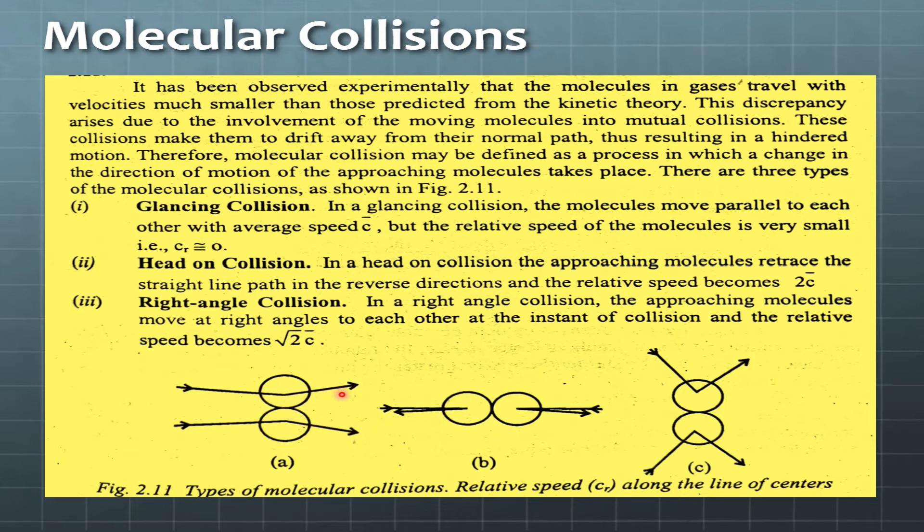But they depart parallel to each other. After collision they move in such a way that these two lines are approximately parallel with slight change, so they move parallel with speed c bar. But the relative speed of the molecules is very small, that is c_r is equal to zero. The speed before collision remains approximately the same after collision, so the relative speed is zero, meaning their speed difference after collision is not great.